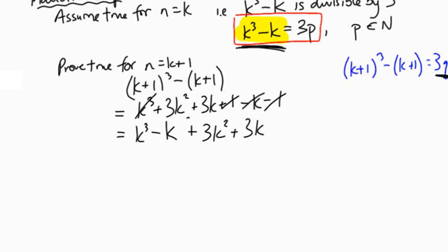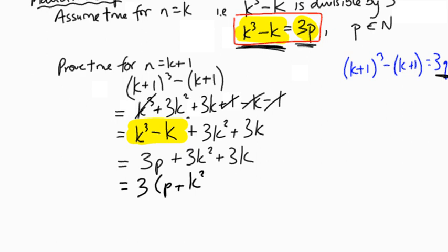So we can substitute that. We know that k³ - k is a multiple of 3, and that leaves us with this expression here, which, fortunately, if we take a common factor of 3 out, we can prove to be divisible by 3.